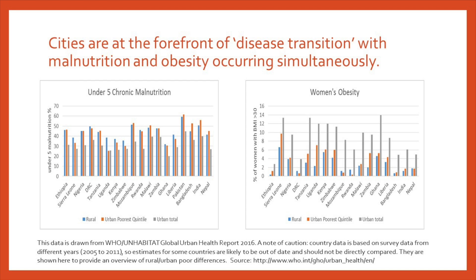Despite limitations of DHS data, it remains one of the only ways to examine these issues. The WHO UN Habitat Global Urban Health Report has conducted within-urban analysis across wealth quintiles. For under-five chronic malnutrition, the urban poorest quintile — particularly in South Asia — actually have higher rates than rural areas. There is also a lot of focus on cardiovascular disease and diabetes in South Asia and increasingly across sub-Saharan Africa, and data indicates this is higher in the urban poor than rural areas, though it currently affects wealthier urban populations most.